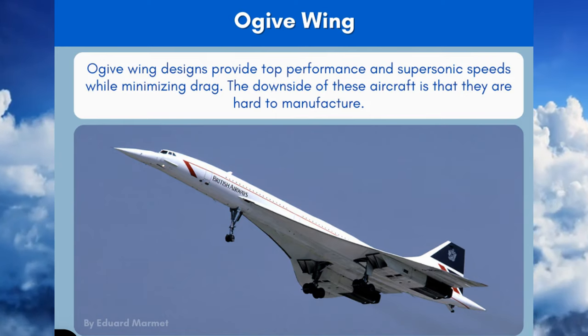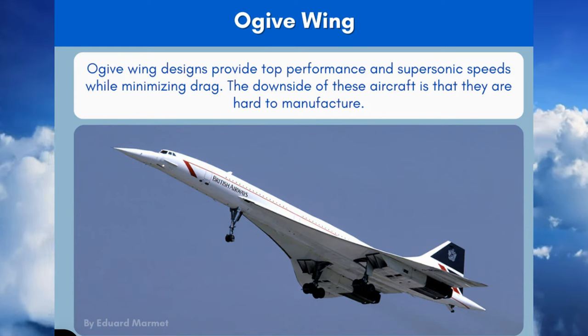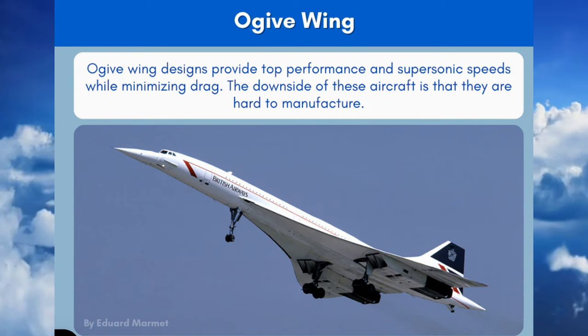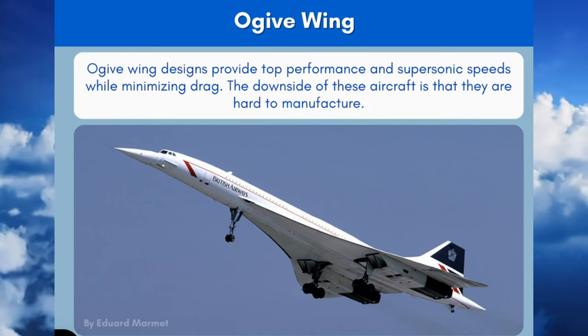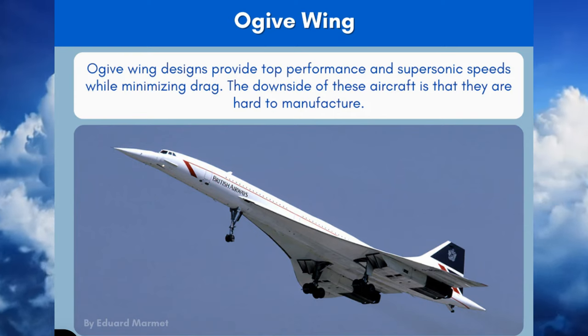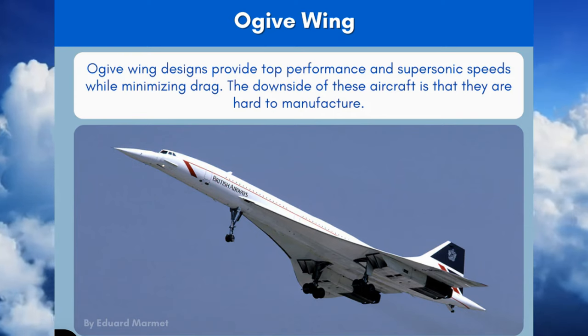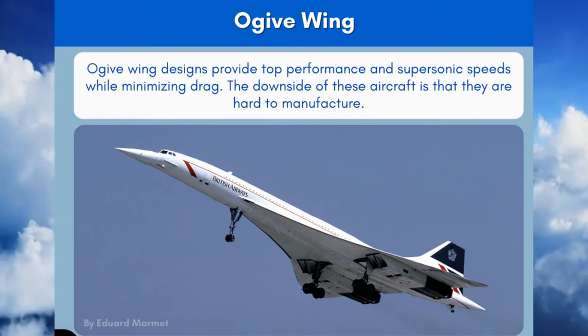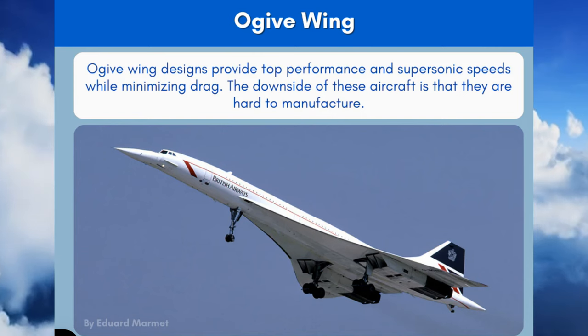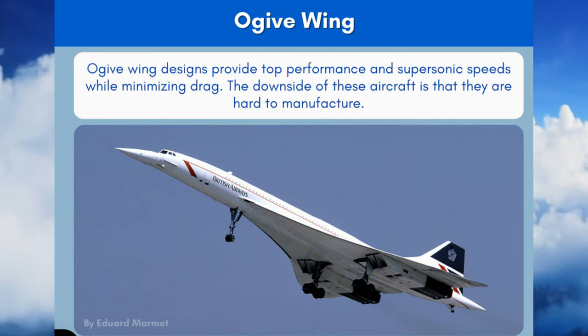6. Ogive Wing. Ogive wing designs provide top performance at supersonic speeds while minimizing drag. The downside of these aircraft is that they are hard to manufacture.